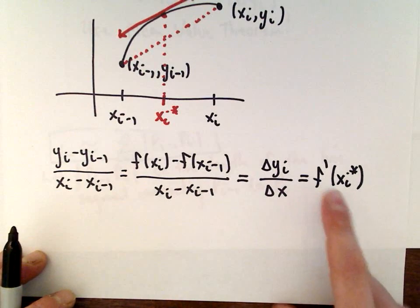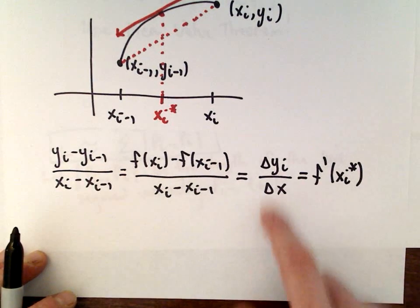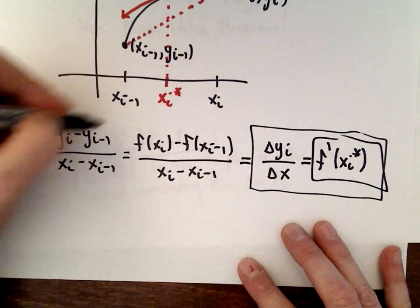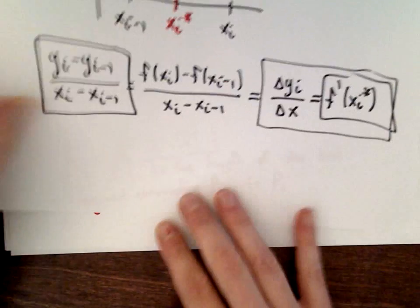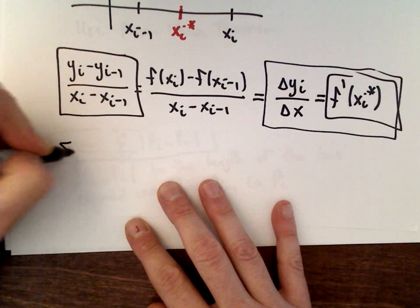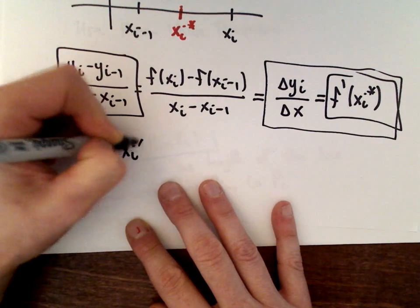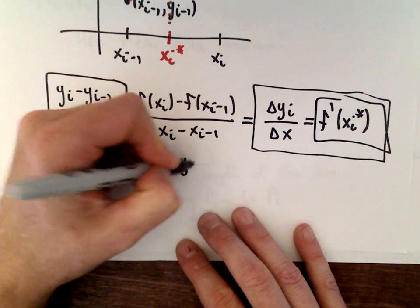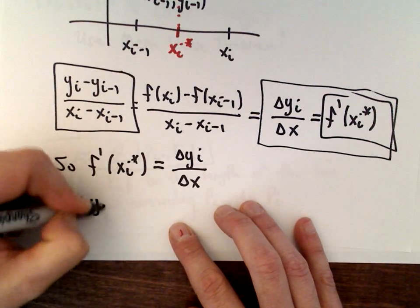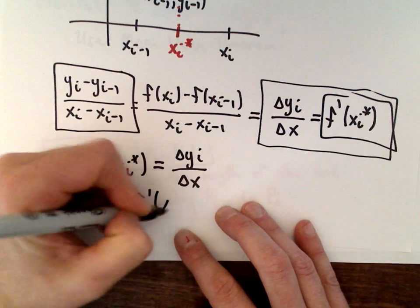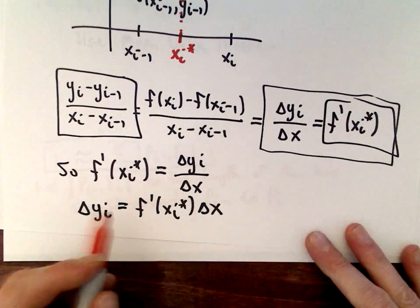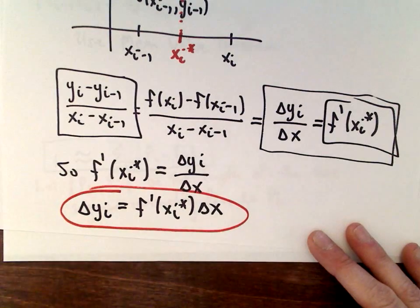The Mean Value Theorem relates a derivative to an average value — a change in y over a change in x. I'm going to use the result that delta y sub i equals f prime of x sub i star multiplied by delta x. This is where the Mean Value Theorem gets used — we're going to replace our delta y sub i with this expression.